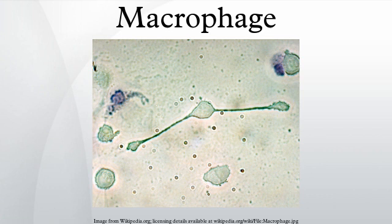When a B cell in the lymph node recognizes the same unprocessed surface antigen on the bacterium with its surface-bound antibody, the antigen is endocytosed and processed. The processed antigen is then presented in MHC II on the surface of the B cell. T cells that express the T cell receptor which recognizes the antigen-MHC II complex cause the B cell to produce antibodies that help opsonization of the antigen so that the bacteria can be better cleared by phagocytes.